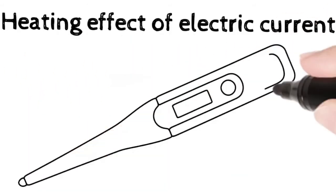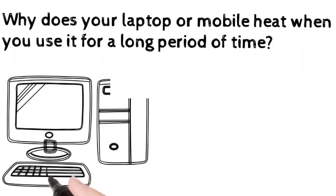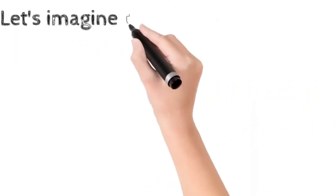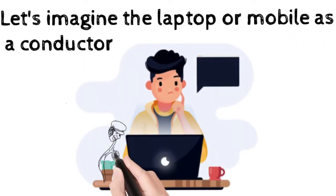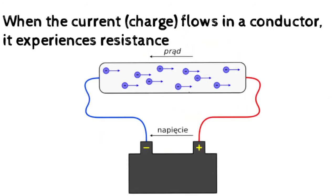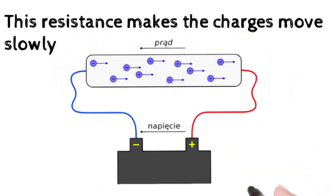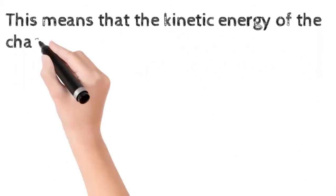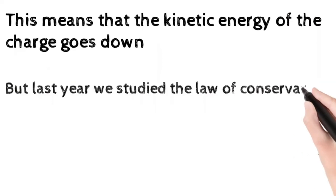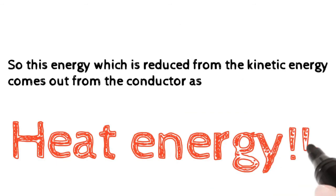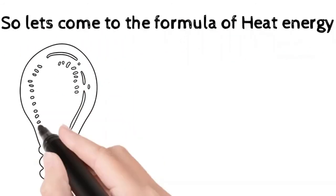Now coming to the heating effect of electric current. Why does our laptop or mobile heat when we use it for a long period of time? When current or charge flows in a conductor, it experiences resistance. This resistance makes the charge move slowly, meaning the kinetic energy of the charge goes down. By the law of conservation of energy, the reduced kinetic energy comes out as heat energy.